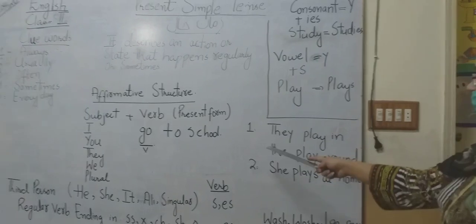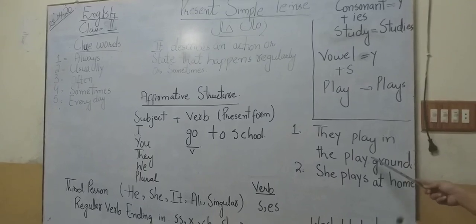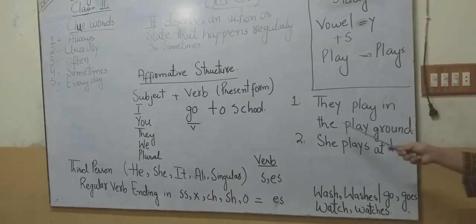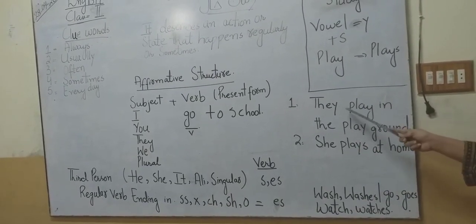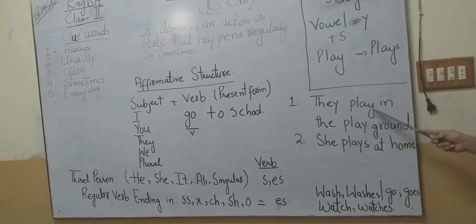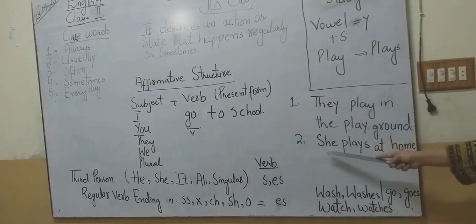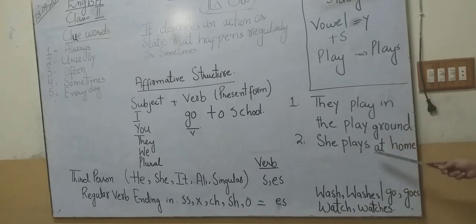Let's take another example. 'They usually play in the playground' — with 'they,' we do not add S or ES to the verb. However, 'She plays at home' — 'she' is a third person singular, so we add S to 'play,' making it 'plays.'